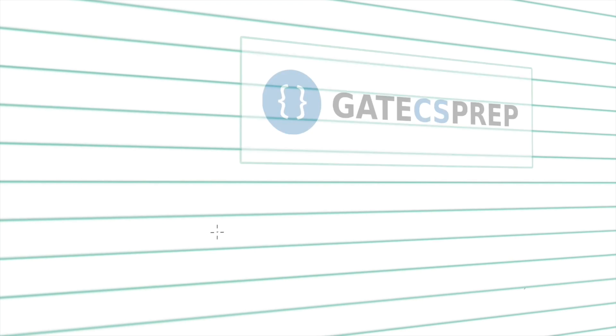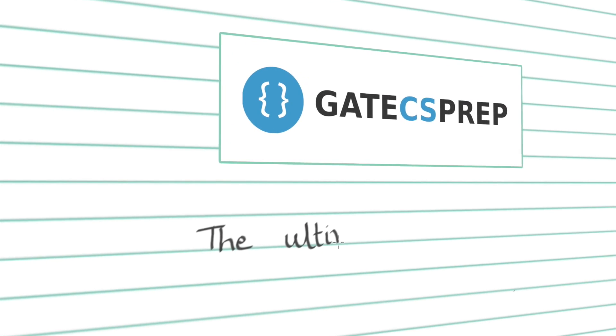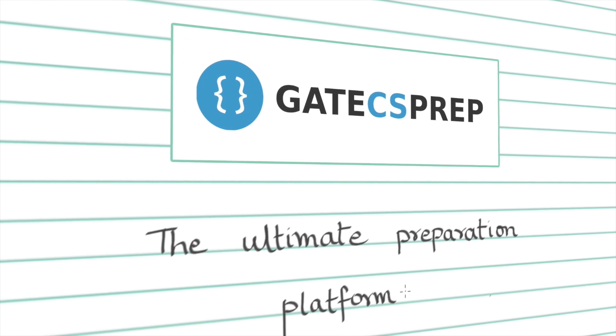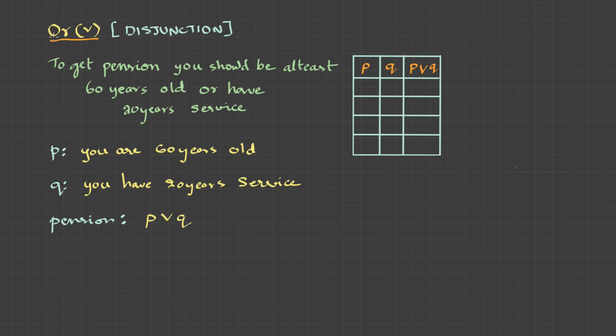Welcome back. In the last video, we covered the first connective AND. So let's proceed to the next connective OR. Here is the next connective OR. It is represented by symbol V and it's also called disjunction. Let's take an example.